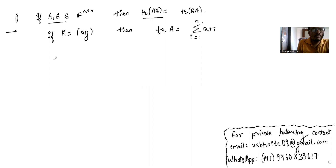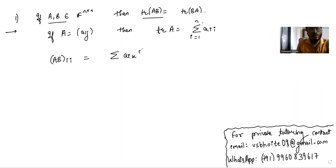The (i,i)-th diagonal entry of AB is basically the summation of a_{ik} b_{ki}, where k goes from one to n.